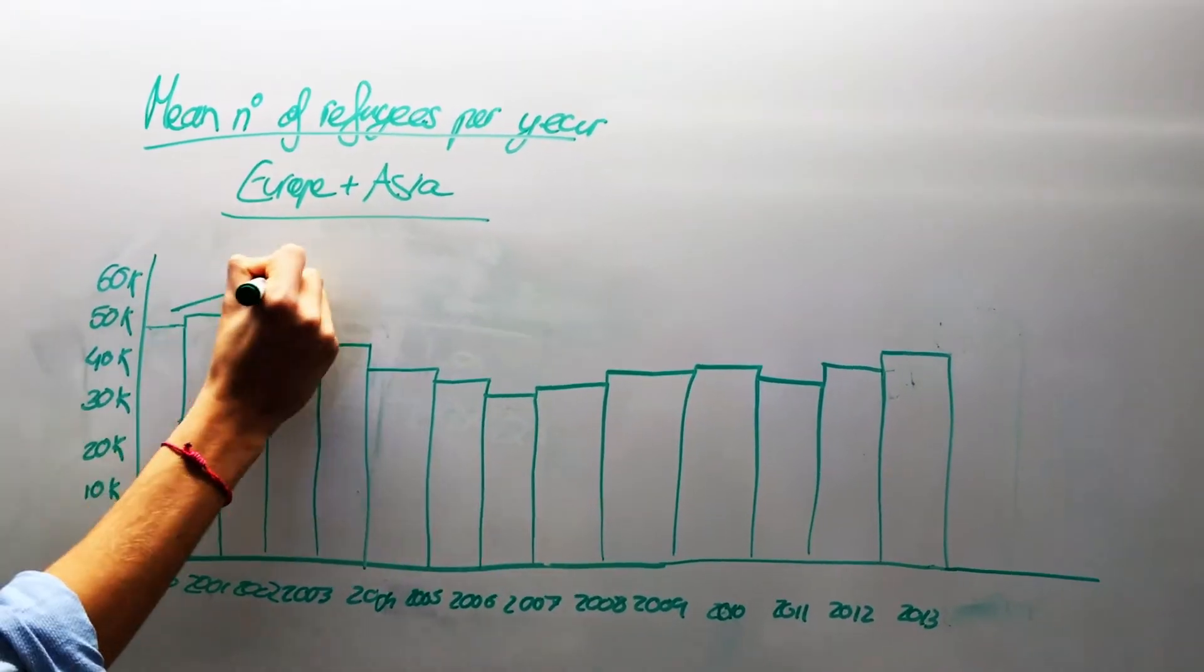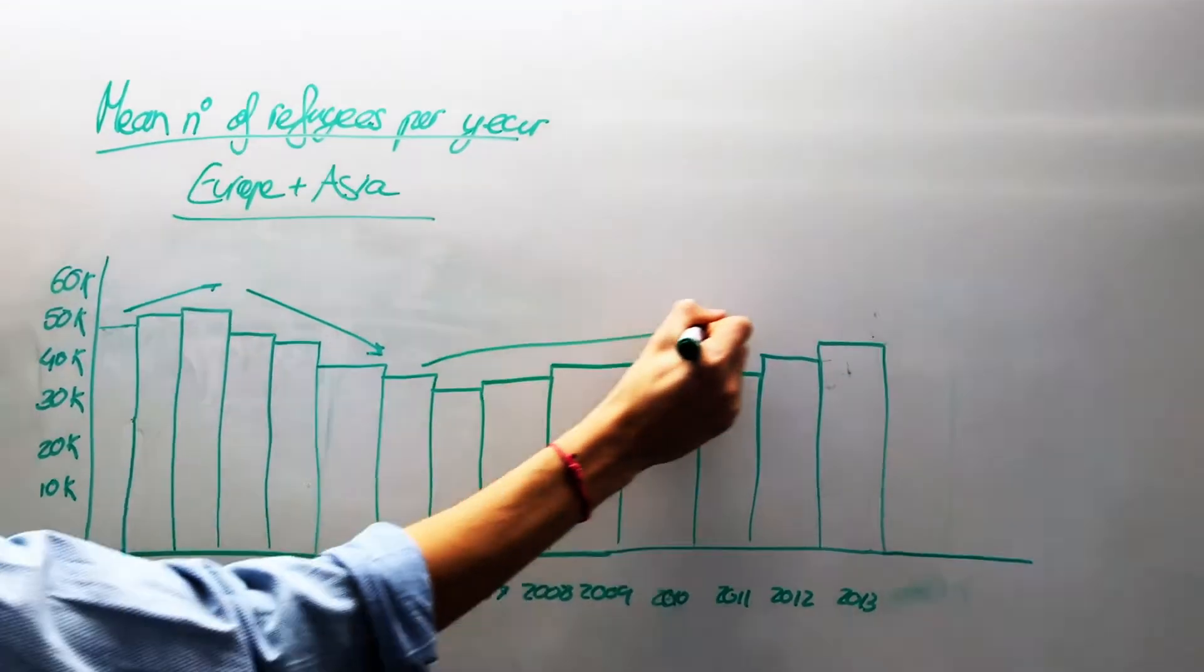The mode is the most common value, the one that occurs most often in our case. We added the number of refugees from 2000 to 2013.